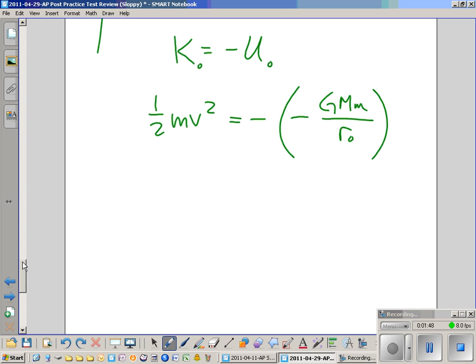So that means solving for v, we get these become positive. That means that v is equal to the square root of 2GM over r₀. That's obviously after we've canceled these test masses.